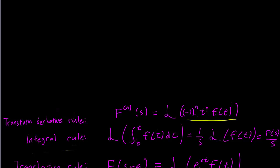So here, clearly in our case, n is equal to 2 since we have a t squared in front of our function.